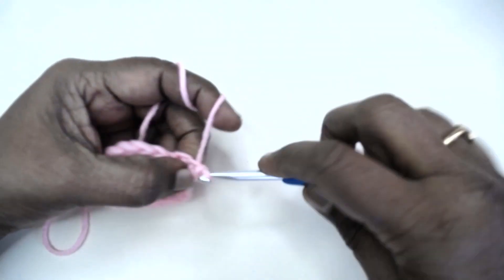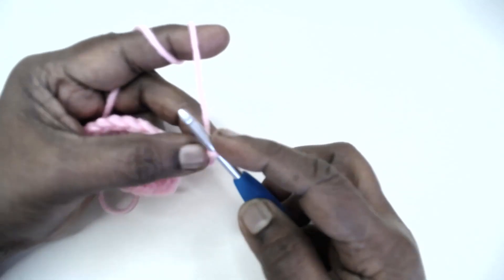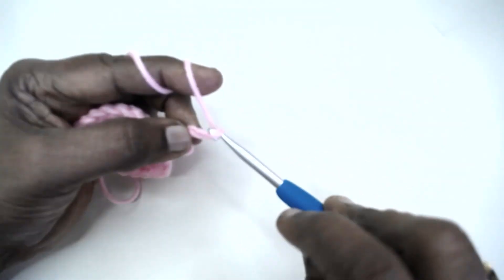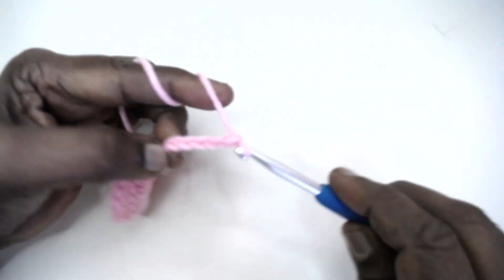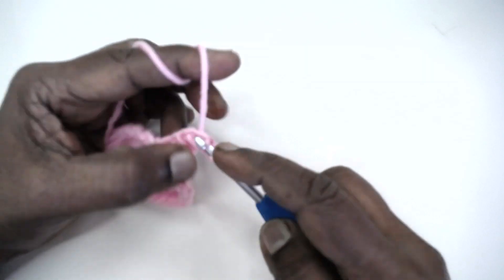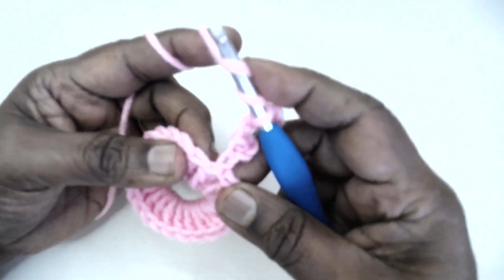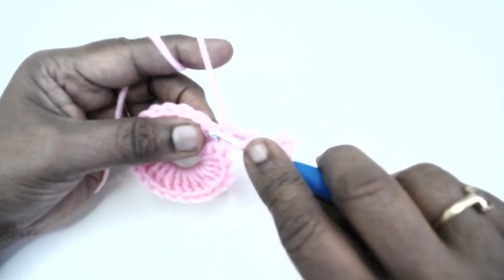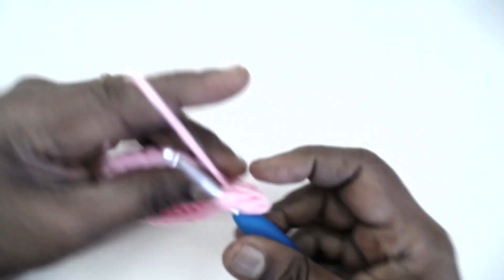While we have made a small picot, now chain one and make a large picot which is made up of five chains. Slip stitch to the fifth chain, that is the first chain of the five chains. Now place two trebles in the same stitch where we began, where we made the last slip stitch.